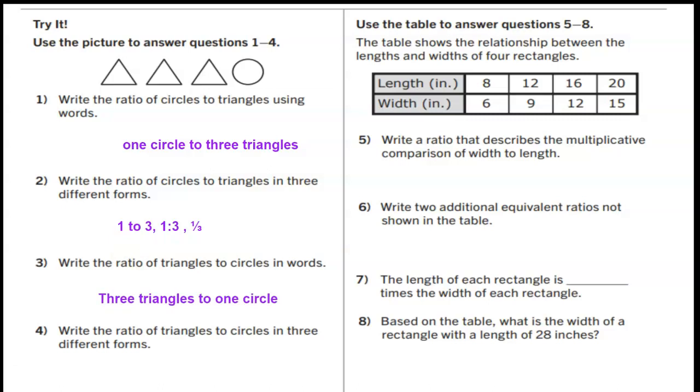Number four. Write the ratio of triangles to circles in three different forms. Pause the video and write this information down. We know the ratio for triangles to circles is going to be three to one, three colon one, or three over one.